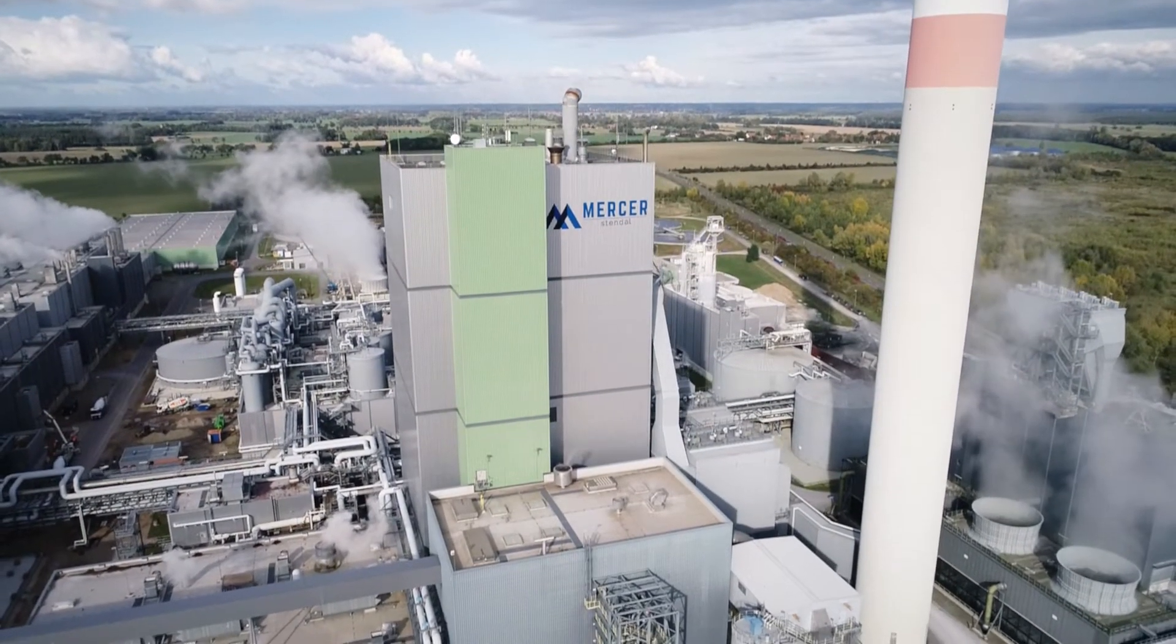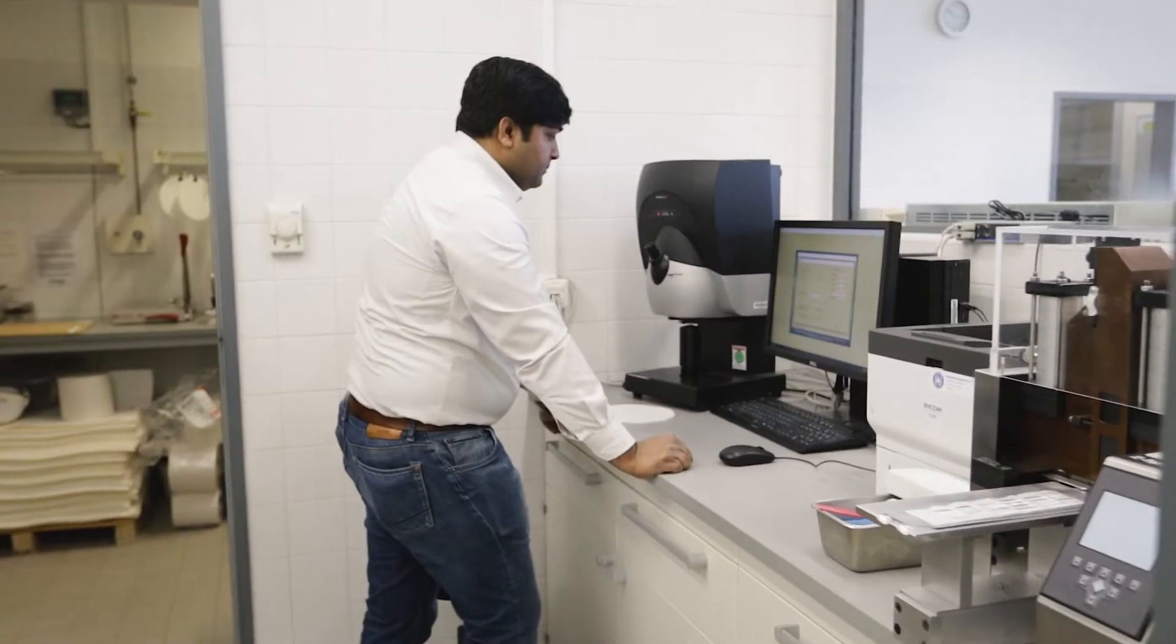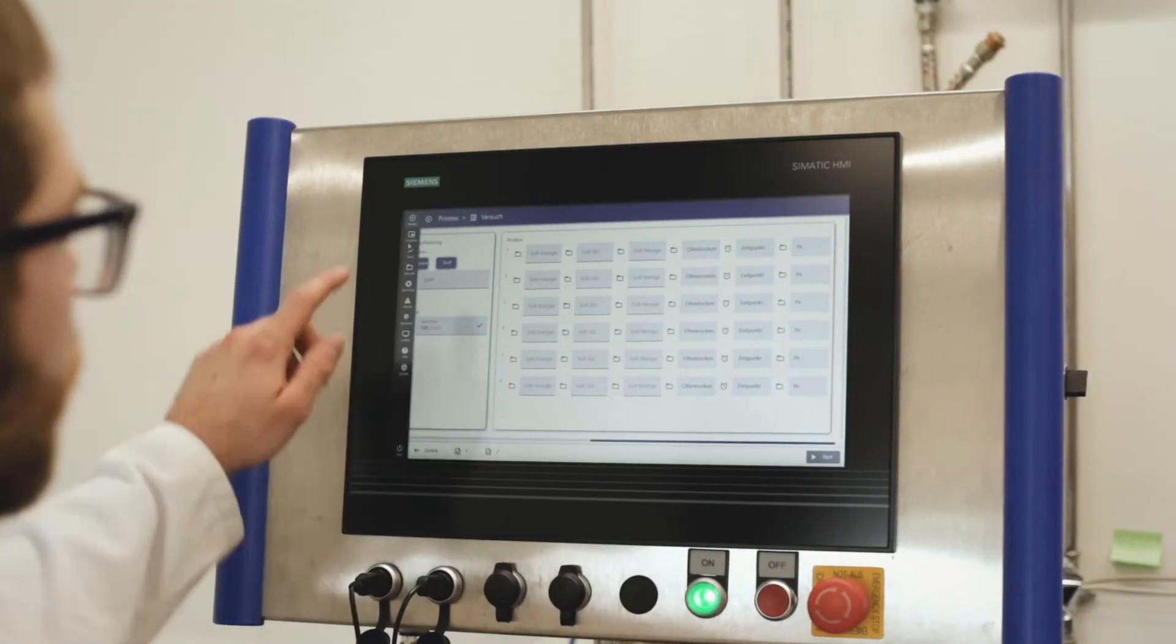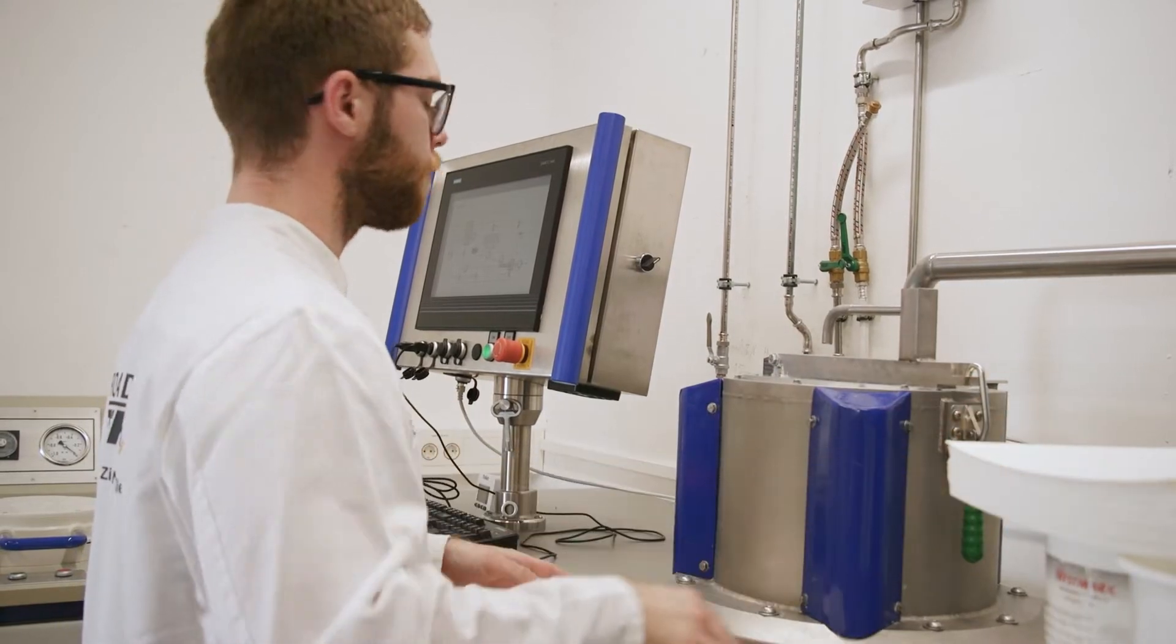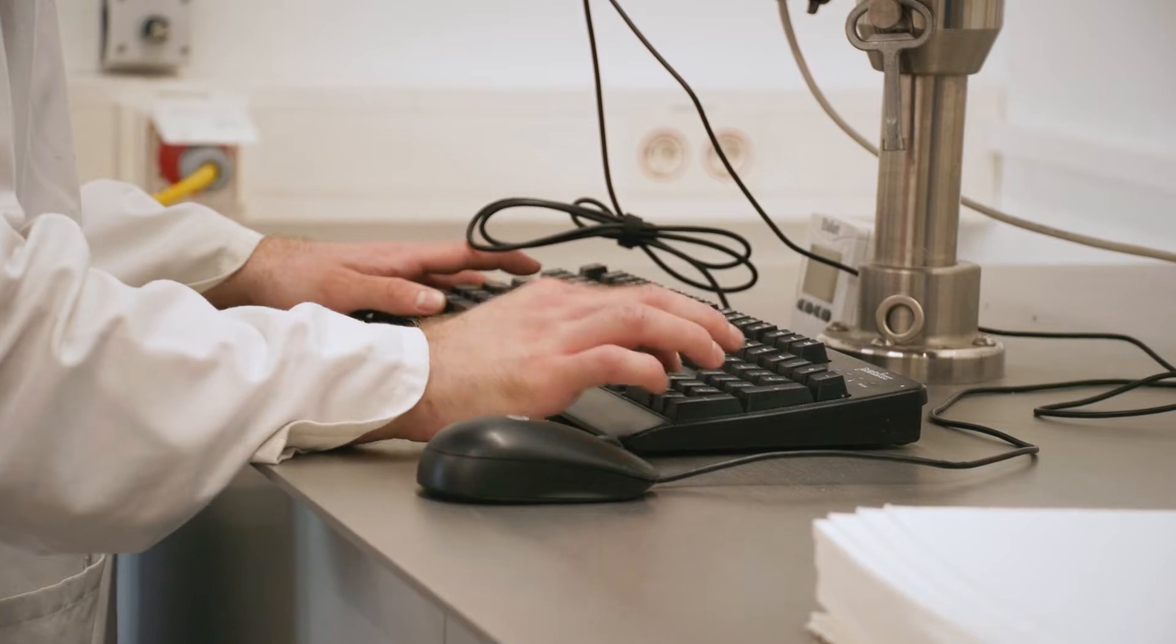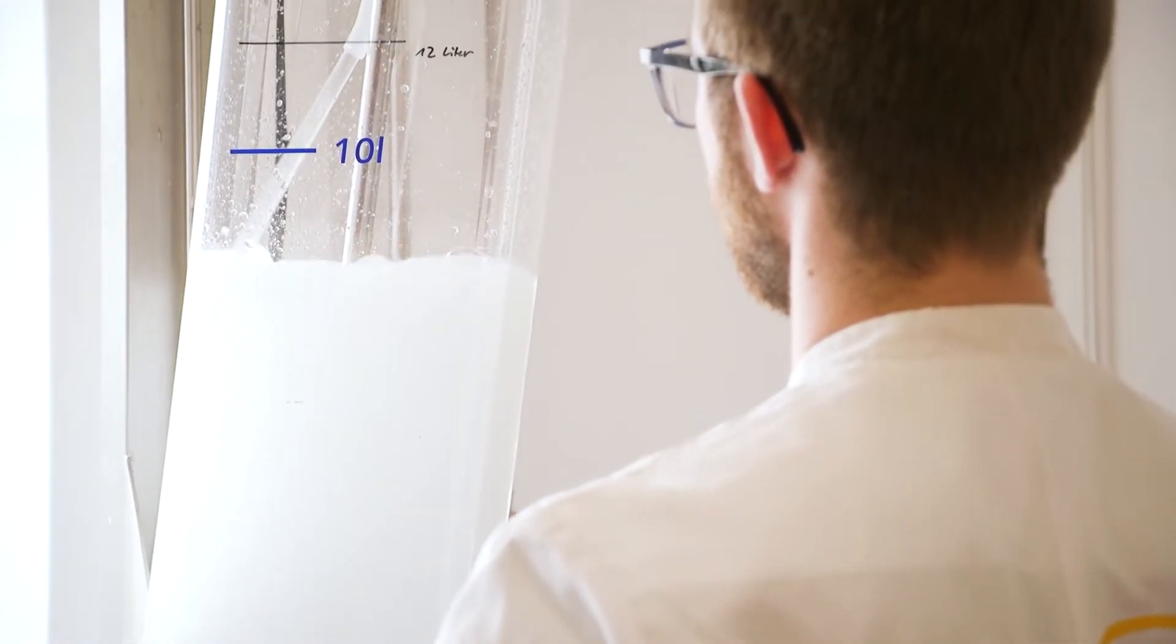Selling market pulp requires in-depth knowledge of the fiber properties and how they affect the products into which they are made. Refining is a key process in paper making, an important link between pulp and paper, between Mercer and our customers. We focus on this process in our fiber center.